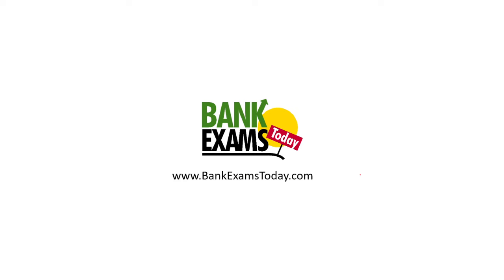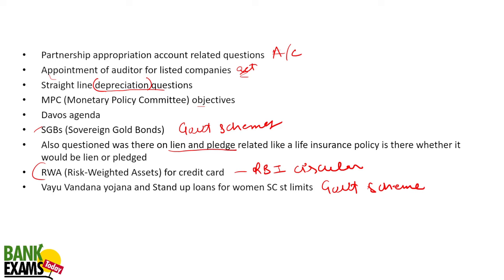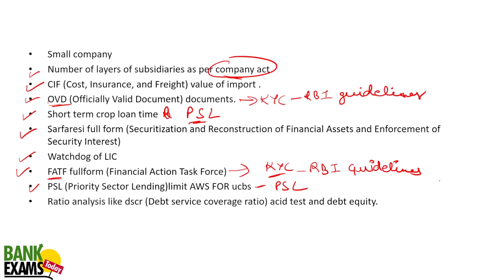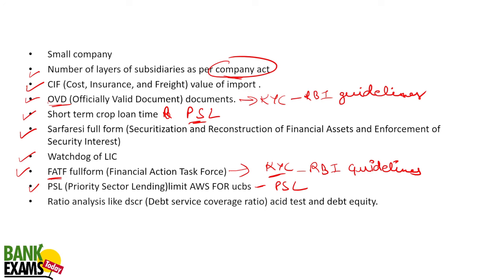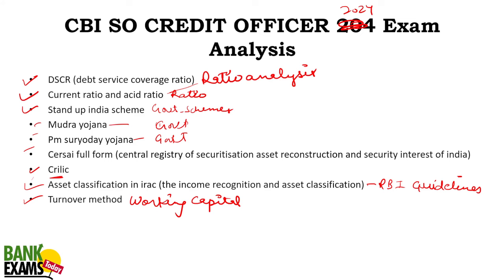So these were the questions asked in the exam. A lot of questions came from RBI circulars, government schemes, and specifically from PSL, IRAC norms, and working capital. Something new this time was that questions came from the Companies Act, whereas Negotiable Instruments Act questions, which usually appear, were absent this time. Ratio analysis had quite a few questions. Some very basic general questions like the full form of SARFAESI and the purpose of CERSAI also appeared.